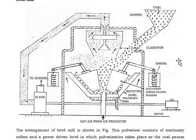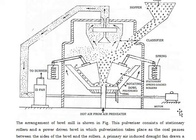Hot air from the air preheater enters where coal is fed from the hopper into the rotating ball. You can see the rotating ball in the sketch where very hot air from the air preheater is available. The arrangement of the ball mill is shown in the figure. This pulverizer consists of stationary rollers — you can see them in the figure — and a power-driven bowl in which pulverization takes place as the coal passes between the sides of the bowl and the rollers.